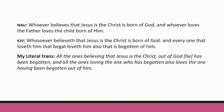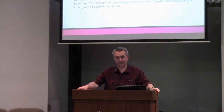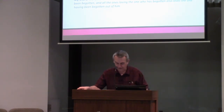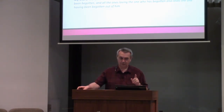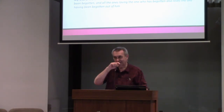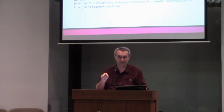Here's my literal translation — it's not really smooth, but it's trying to go word for word from Greek to English: 'All the ones believing that Jesus is the Christ, out of God he has been begotten. And all the ones loving the one who has begotten also loves the one having been begotten out of him.' The key thing to note: the King James is actually more accurate here than the New American Standard.